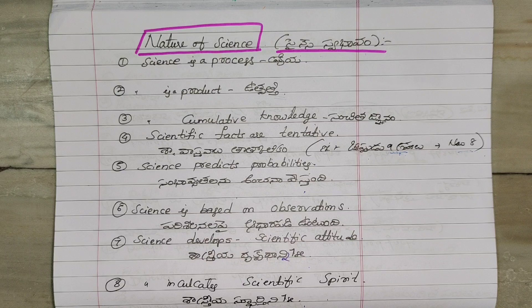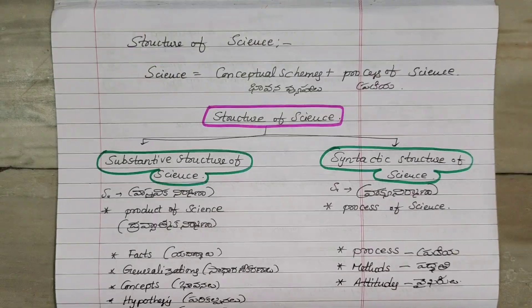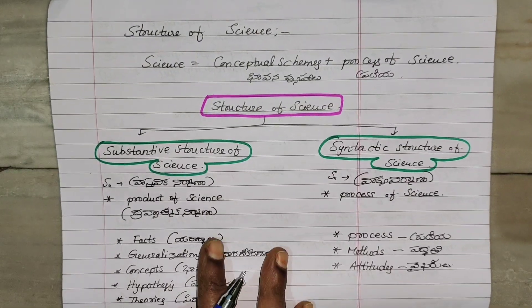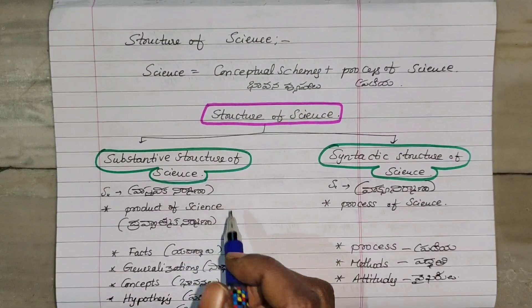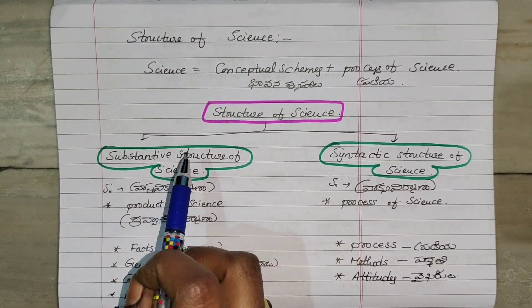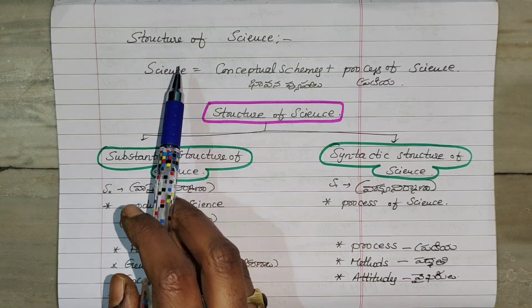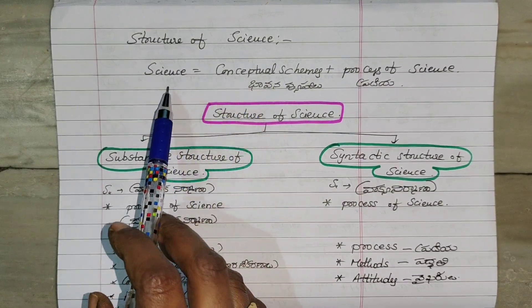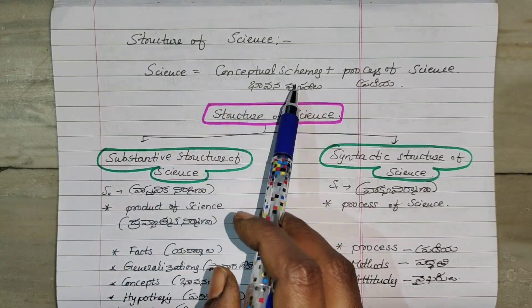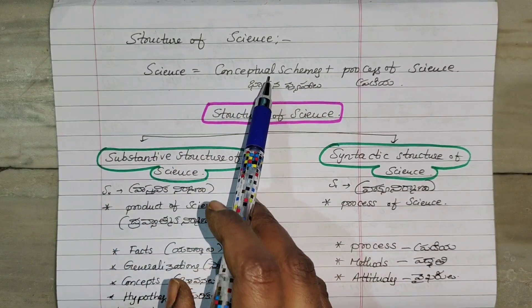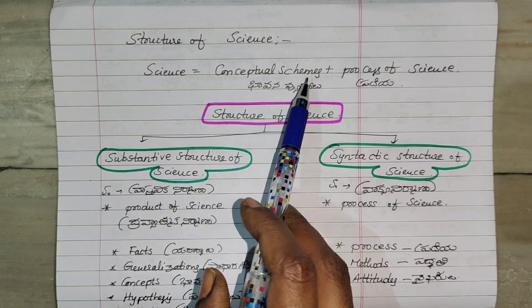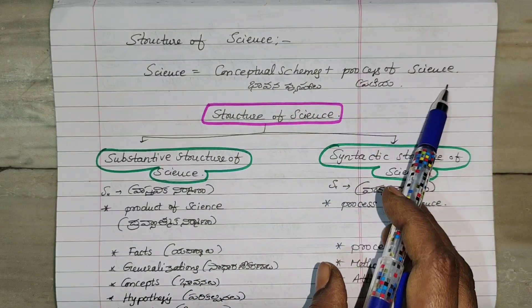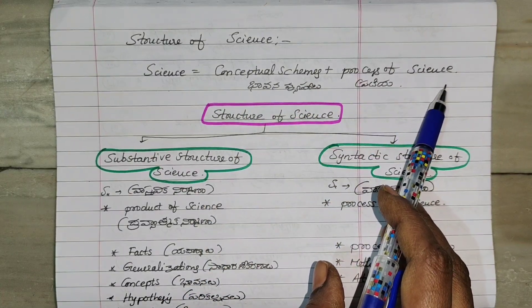Next topic is Structure of Science. Science is a combination of Conceptual Schemes plus the Process of Science and Matter.